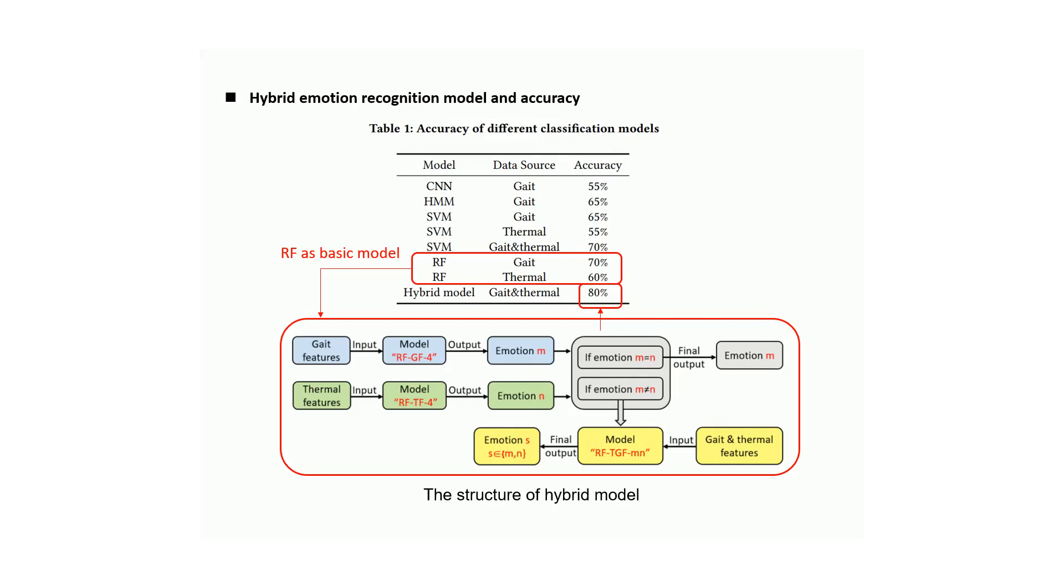Using the hybrid model, we get a better result, 18% improvement over the unimodal classifier.